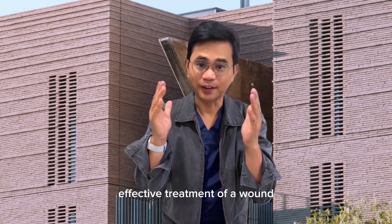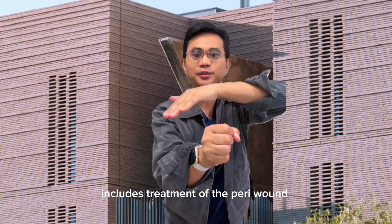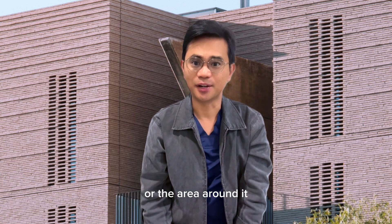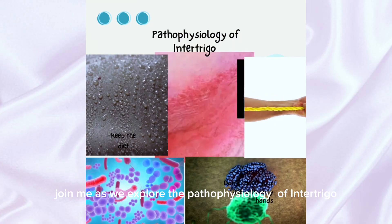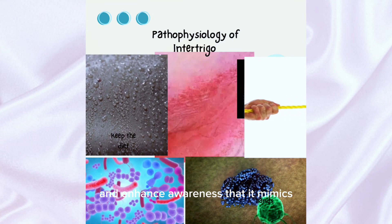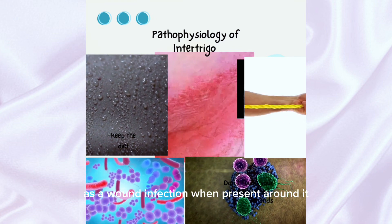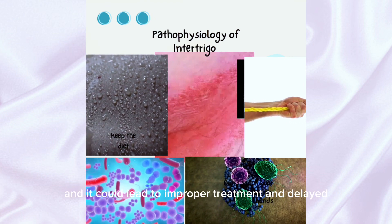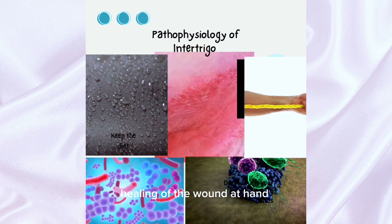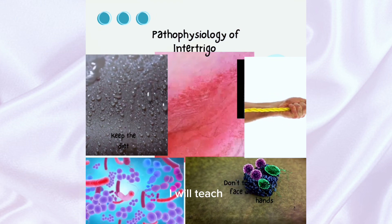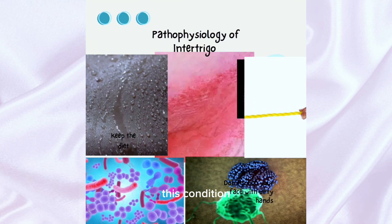As a rule of thumb, effective treatment of a wound includes treatment of the peri-wound, or the area around it. Join me as we explore the pathophysiology of intertrigo and enhance awareness that it mimics a wound infection when present around it, which could lead to improper treatment and delayed healing. In this discussion, I will teach you how to recognize, assess, and treat this condition.